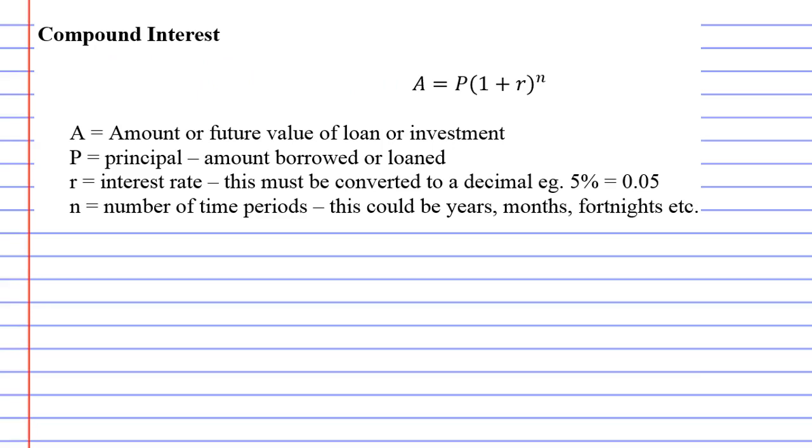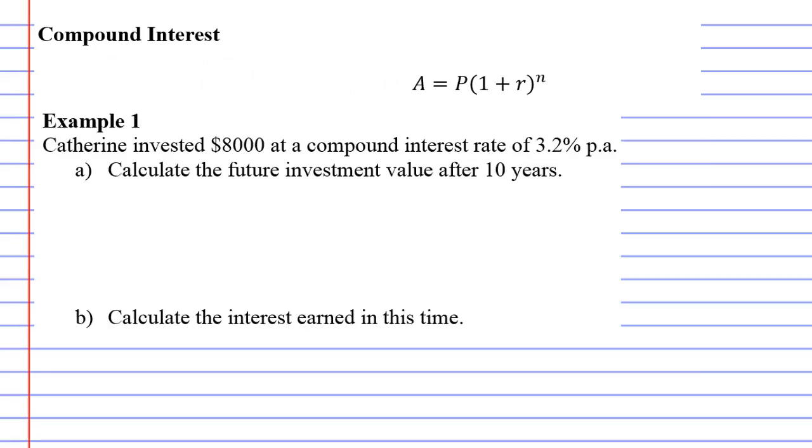We'll go straight to Example 1 and help you understand what that's all about. If we look closely, Catherine's investing $8,000, so that's our principal.